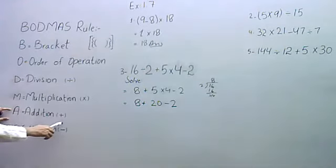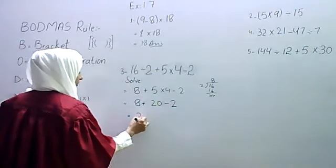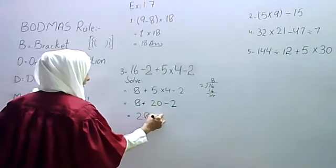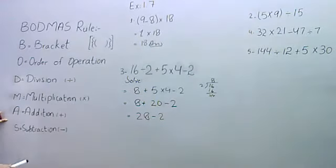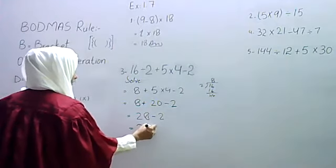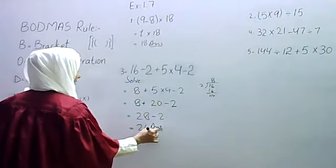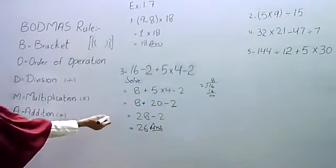Addition. 8 and 20, we need to add. 28. 28. Then, last minute, we have subtraction. 28 minus 2, 26. We have the answer. We have BODMAS. We have the answer. 26.